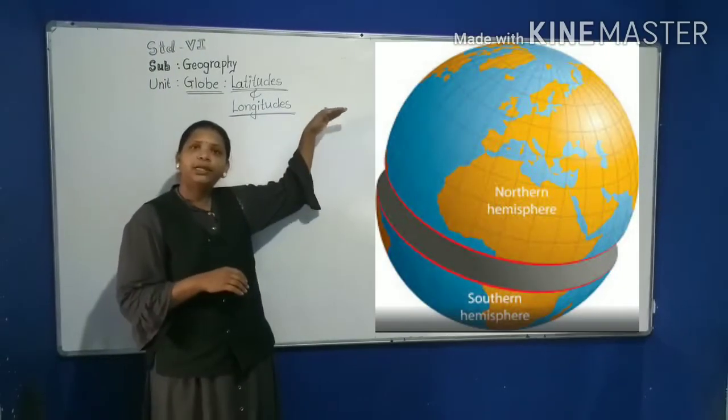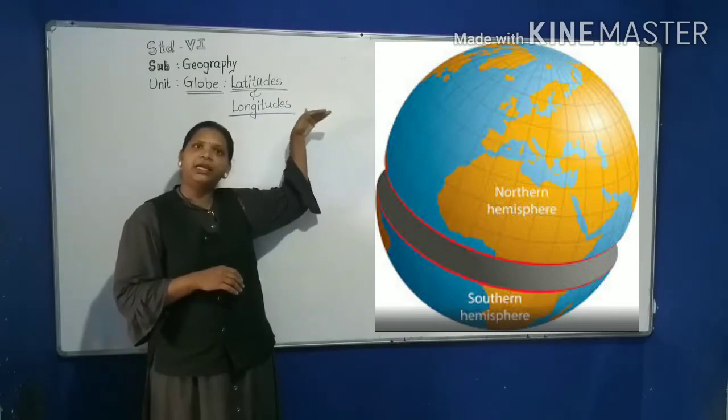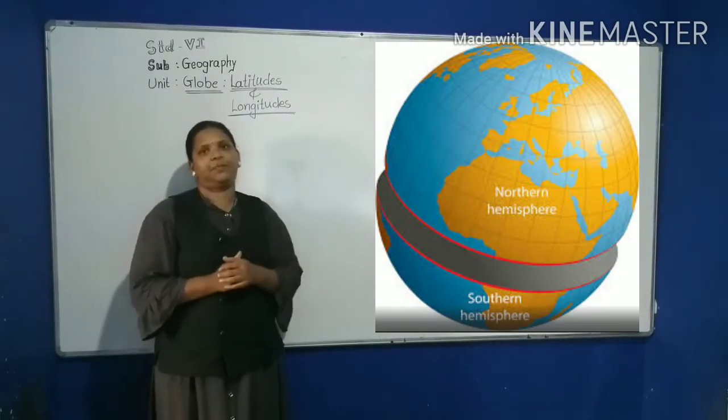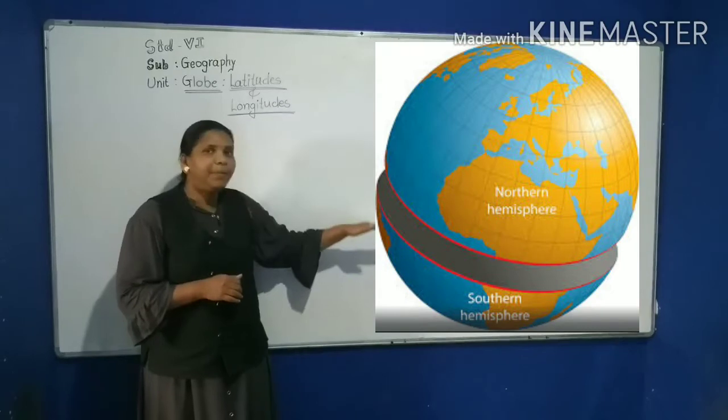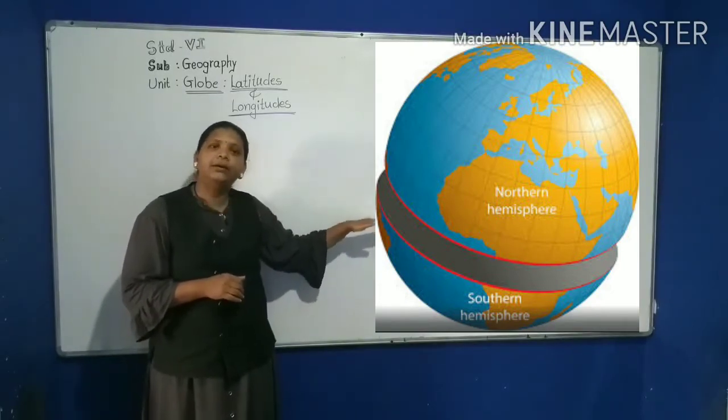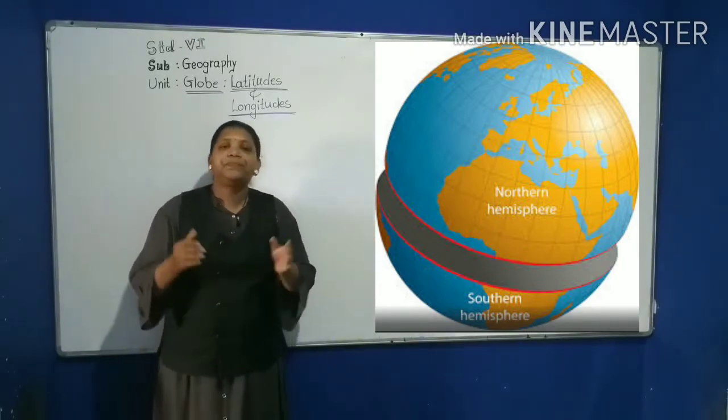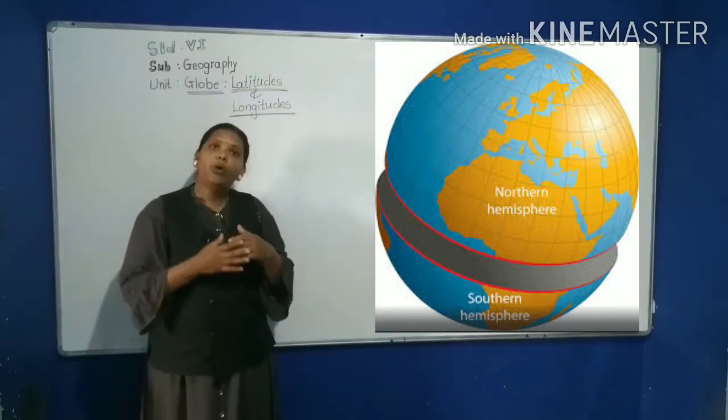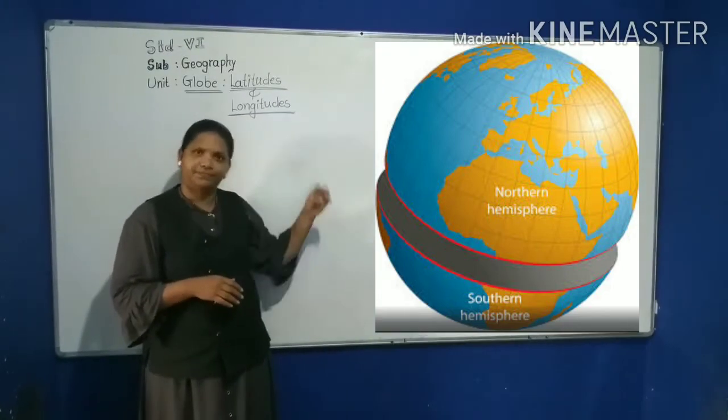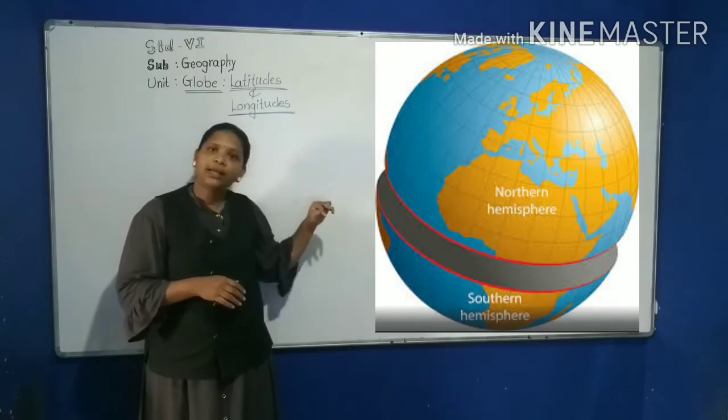The north part of the equator is called the northern hemisphere, and the part below the equator is called the southern hemisphere. They both are equal halves.